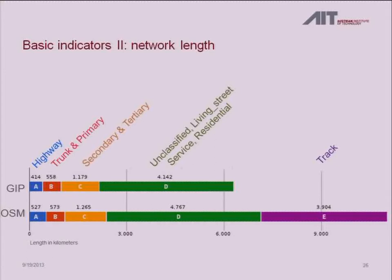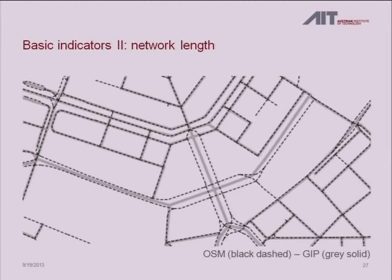For network length, using the road classes I introduced earlier — highways, trunk, secondary, and others — the tracks class was excluded because we were told it wasn't included in the Austrian street network export we received, so unpaved roads were simply absent. Excluding group E, OpenStreetMap is still longer overall across all classes, because the Austrian reference graph is more generalized — they might have just one edge where OpenStreetMap has two. So comparing length shows an indicator but doesn't tell you whether OpenStreetMap is better or worse.